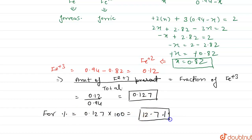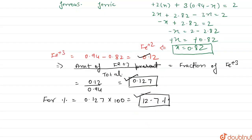So this is the amount of Fe³⁺. This is the section of Fe³⁺, and this is the percentage of Fe³⁺ that exists as Fe³⁺ in the compound. This is the answer. Thank you.